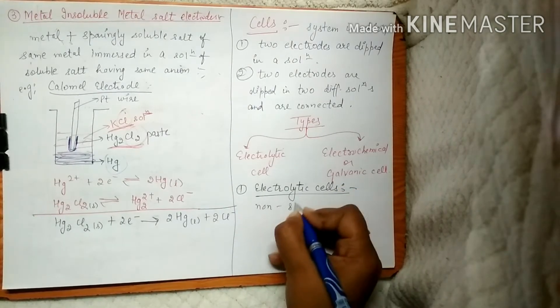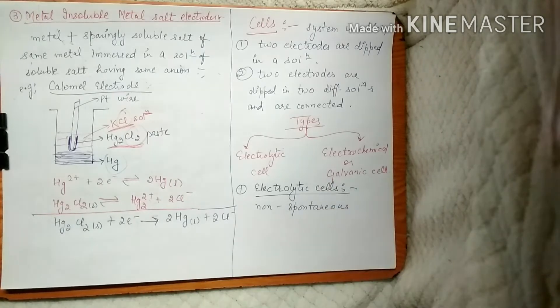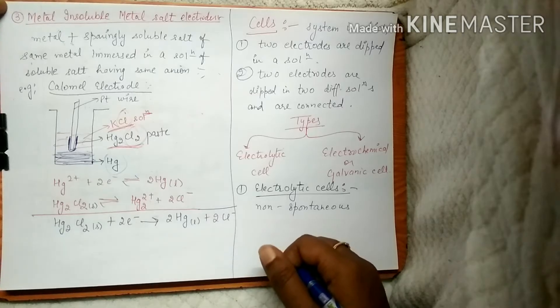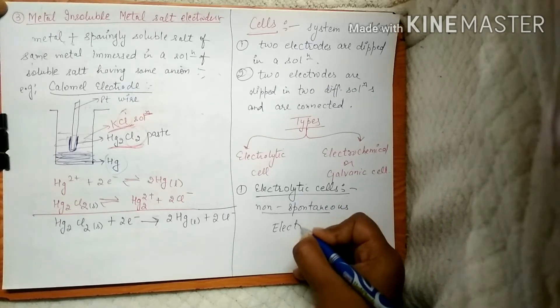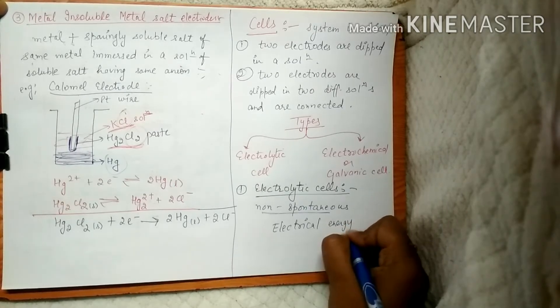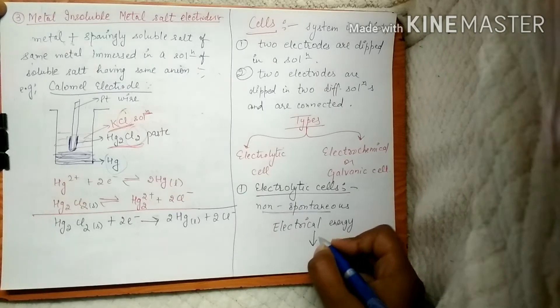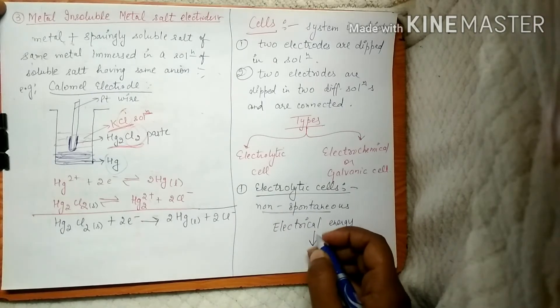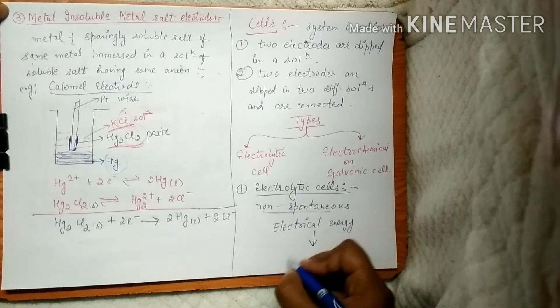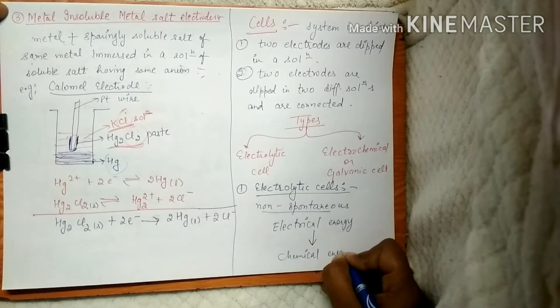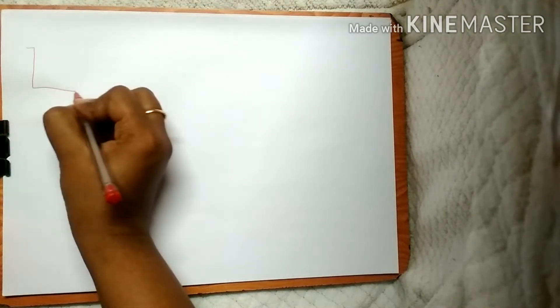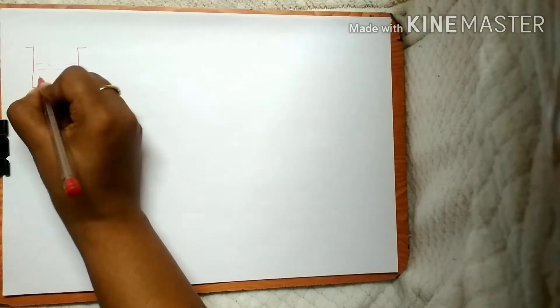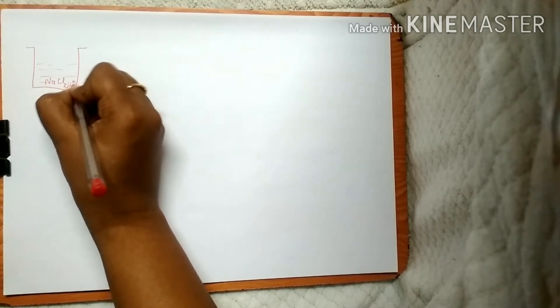First we are going to discuss about electrolytic cells. In electrolytic cells, what we do is, for a non-spontaneous reaction — non-spontaneous reactions are those which do not happen on their own and require some kind of driving force — we provide electrical energy. That electrical energy drives the chemical reaction, so we are converting electrical energy to chemical energy.